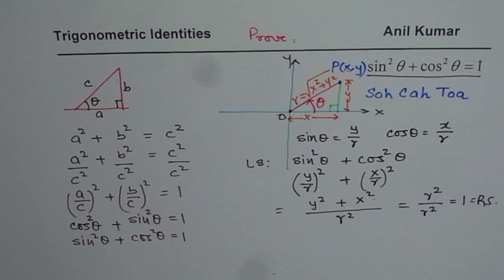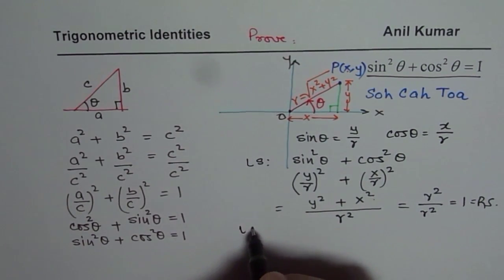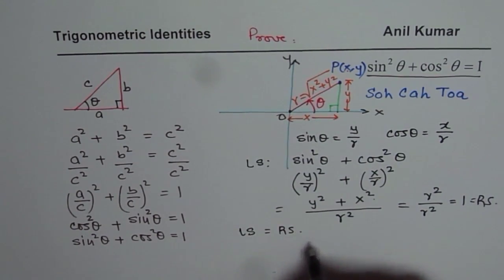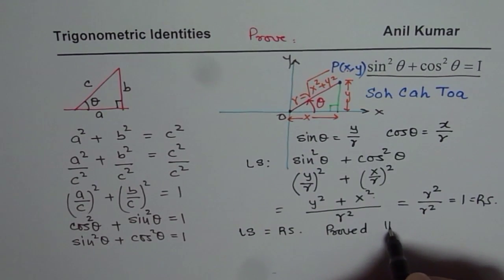Start from one side and prove it to be equal to the other side, which is right side. And we say, well, when left side is equal to right side, we have proved the identity. We have proved the identity.